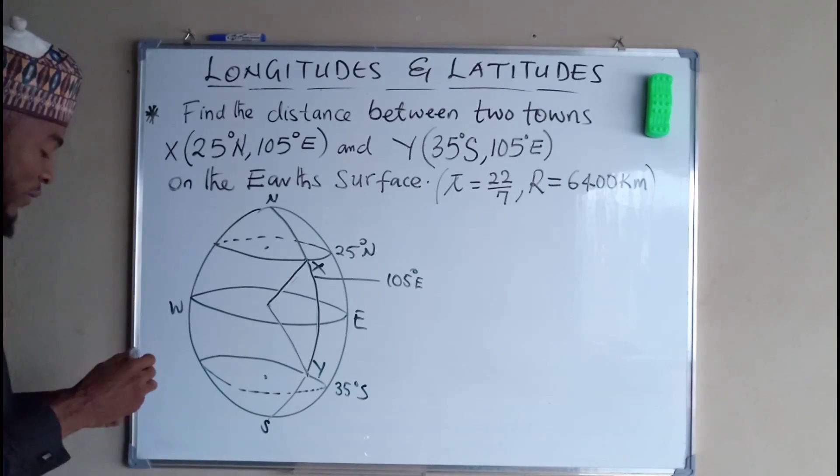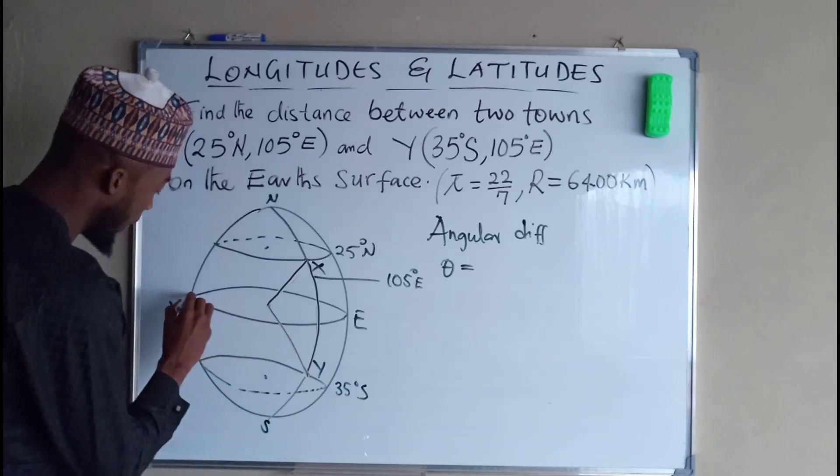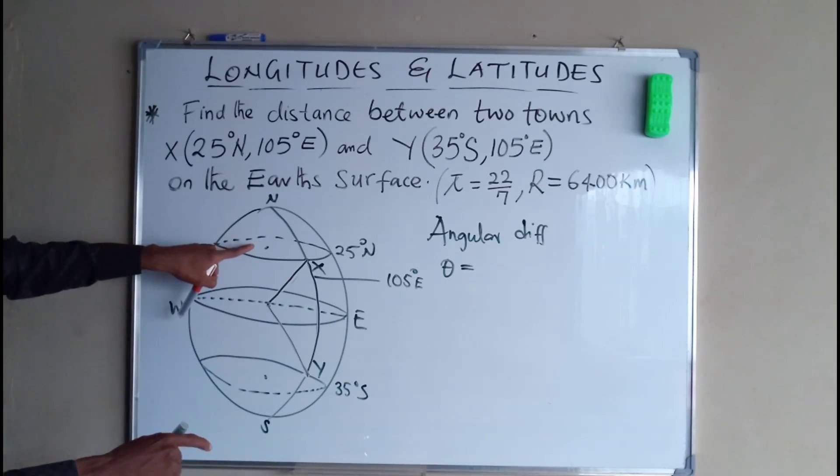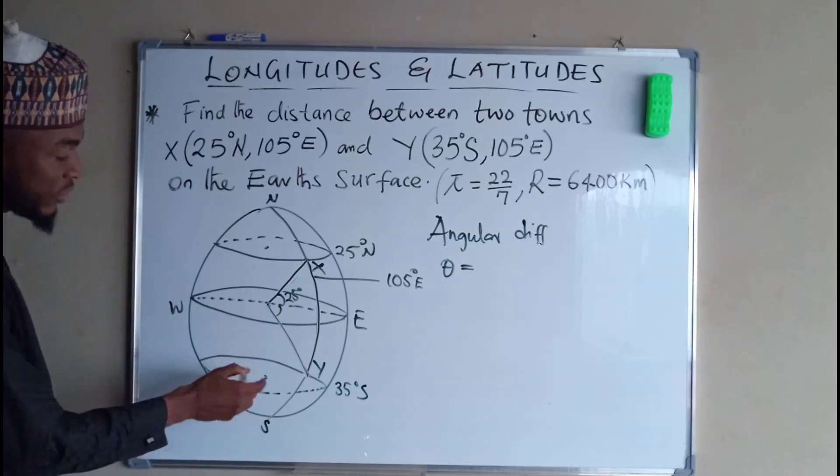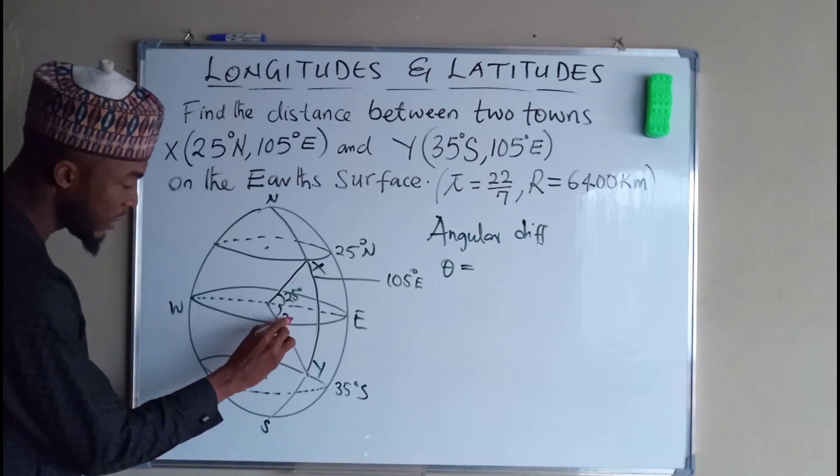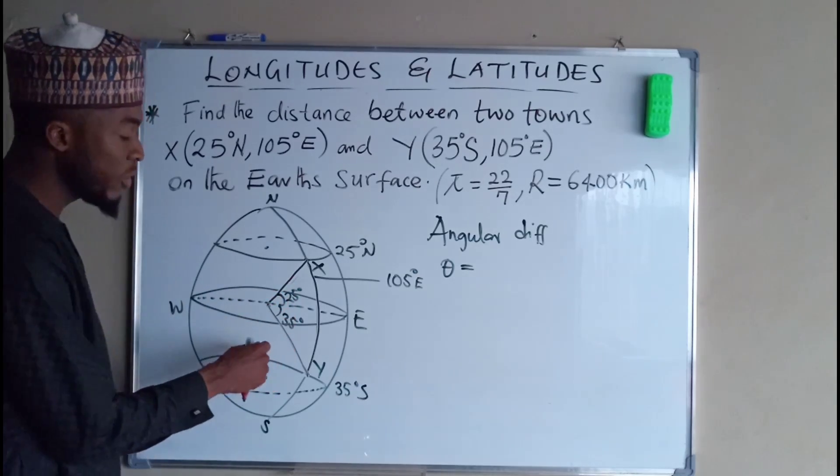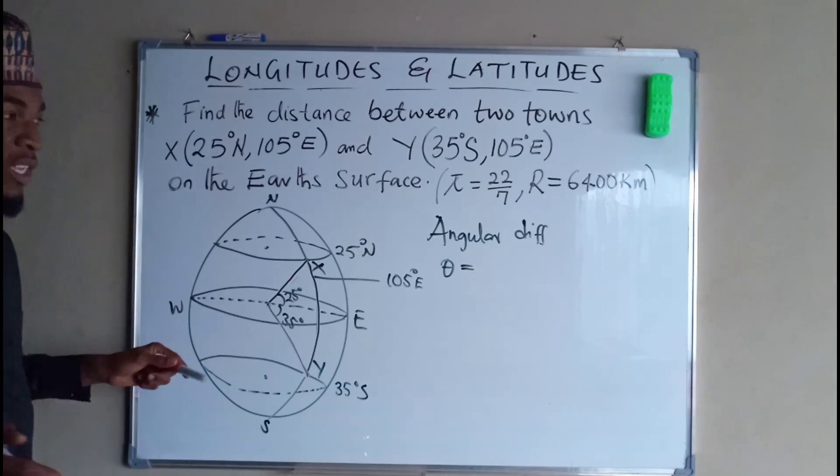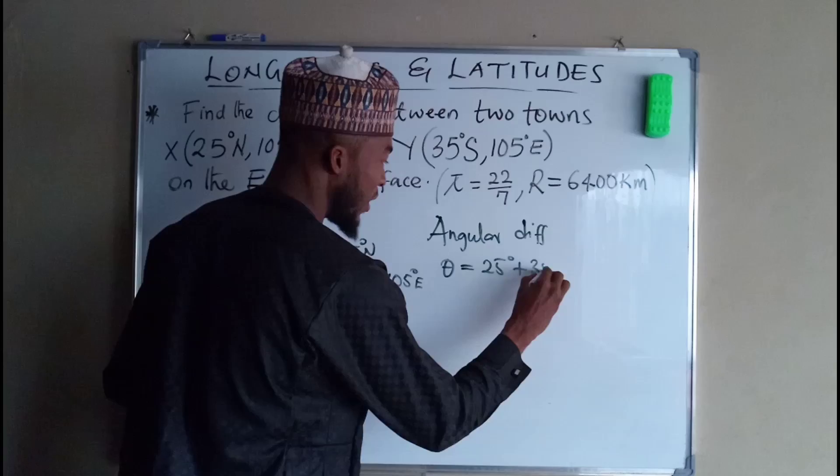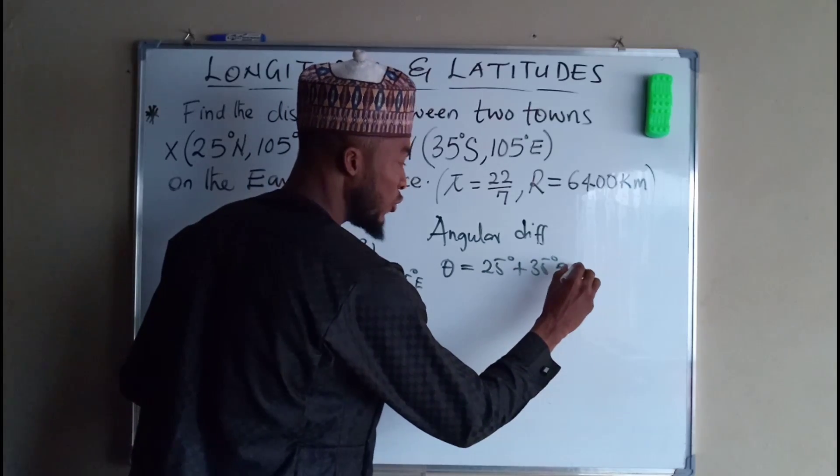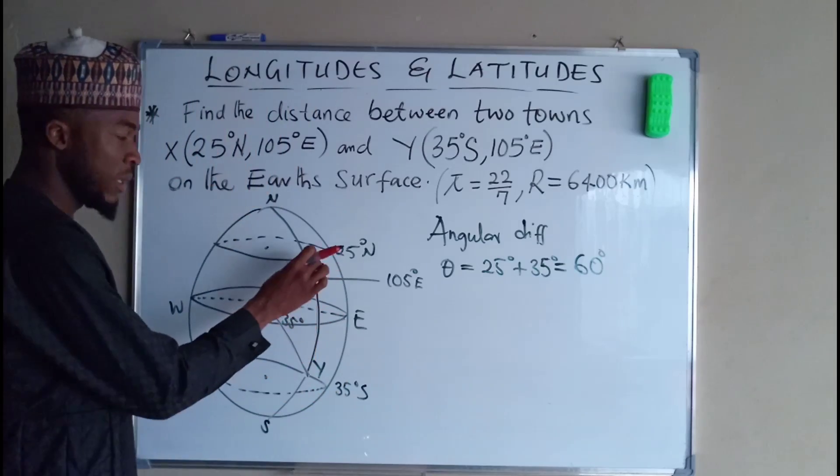But you need to find angular difference because the first latitude is subtended by 25 degrees and the other latitude is 35 degrees. By combining the two angles together we obtain the total angle subtended by two locations which is 25 degrees plus 35 degrees which equals 60 degrees.